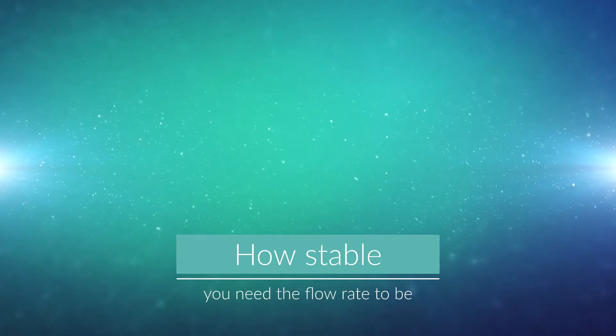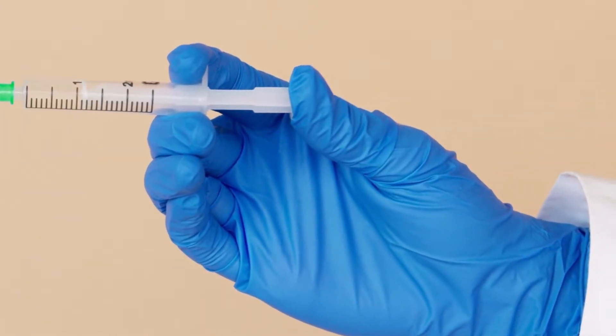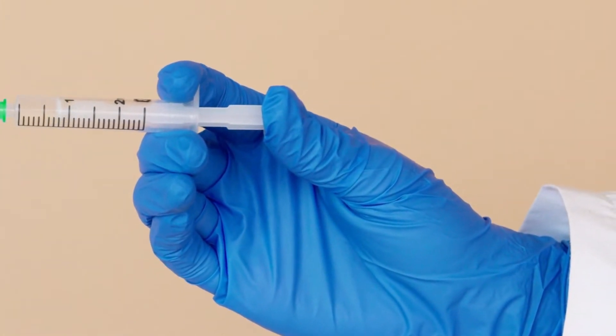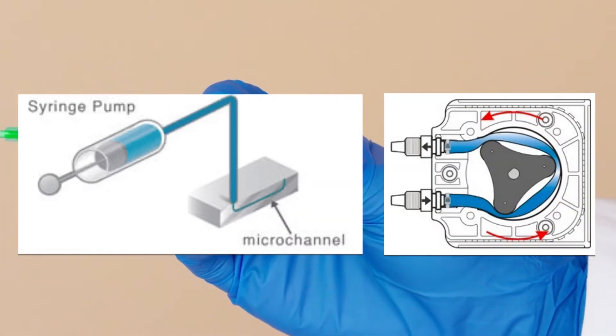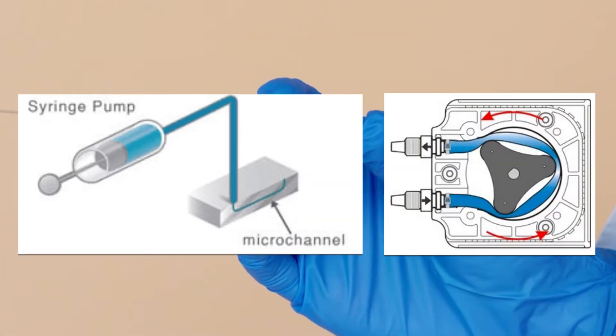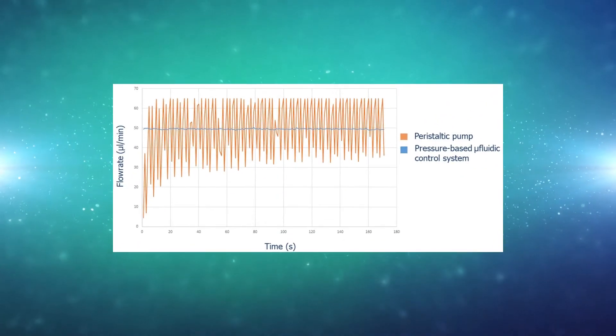Standard fluid volume displacement uses mechanical parts to directly displace a certain volume of fluid. The two main types of pumps using this approach are the peristaltic and the syringe pump. They enable the user to control direct flow by indicating a flow rate as an input.